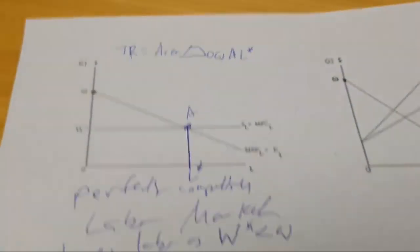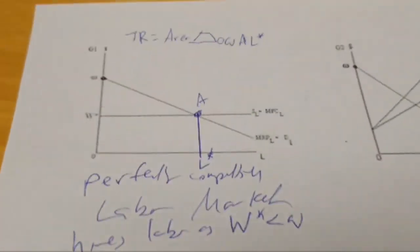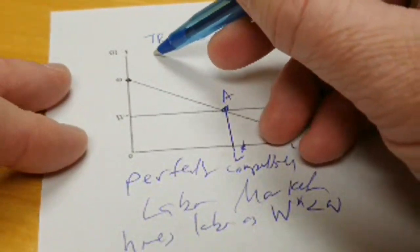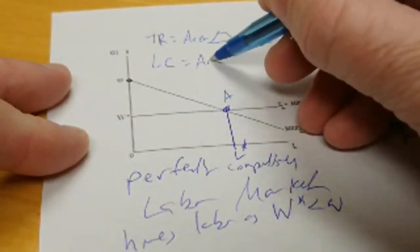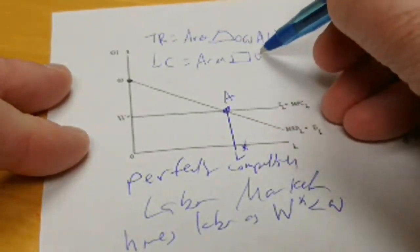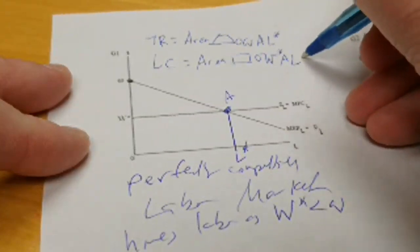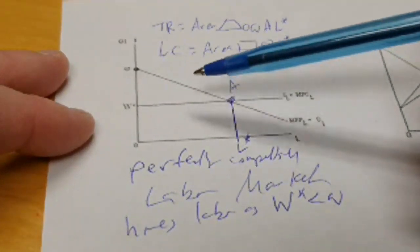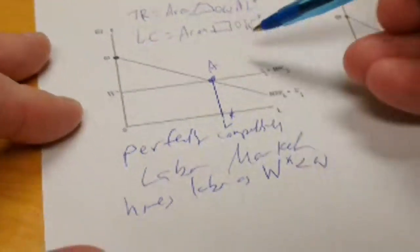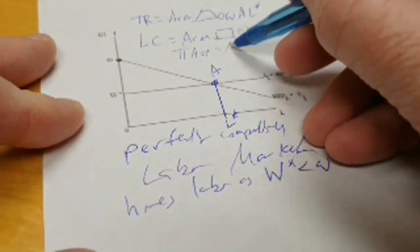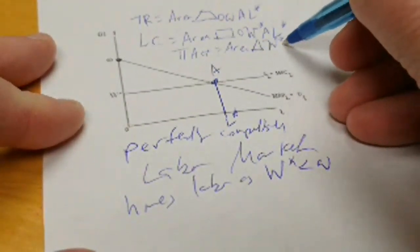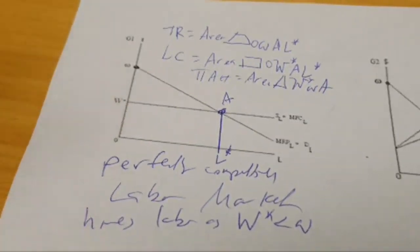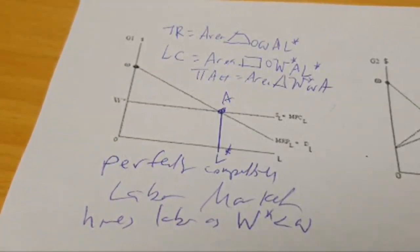Now, we can't find total cost because fixed costs are not located on this graph. What we can find is the labor cost here: wage rate times number of workers employed. So LC for labor cost is equal to area rectangle zero W star A L star. Now, in order to find accounting profits, we are assuming labor is the only explicit cost. And so the trapezoid minus the rectangle is going to give you this triangle here. So we're going to write pi accounting is equal to area triangle W star omega A. But again, we can only make that assumption here in these graphs.